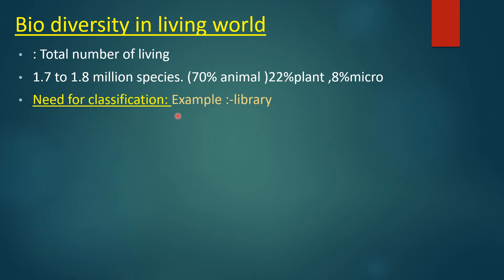इसी कारण इन सभी living organisms के classification की need हुई. इसे एक example से समझते हैं — अगर आप एक library में गए और आपको कोई material search करना है, और library की books का arrangement बिल्कुल भी systematic नहीं है, तो आप उस material को search out नहीं कर पाएंगे, या आपको बहुत ज़्यादा time लगेगा. तो आप librarian के पास जाएंगे, address लेंगे, उस almirah में जाएंगे और वहाँ से material search करेंगे. इस type से इतनी ज़्यादा large quantity में होने के कारण हमें भी animals की study में बहुत problem होती है, तो उनके classification की need हमें होती है.